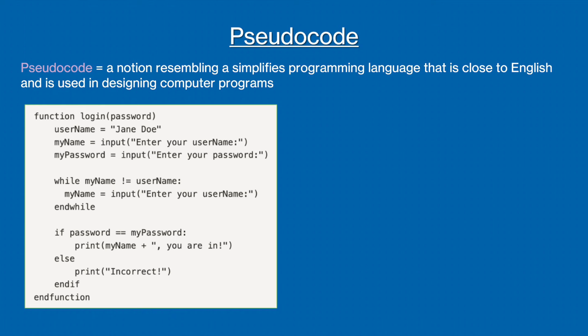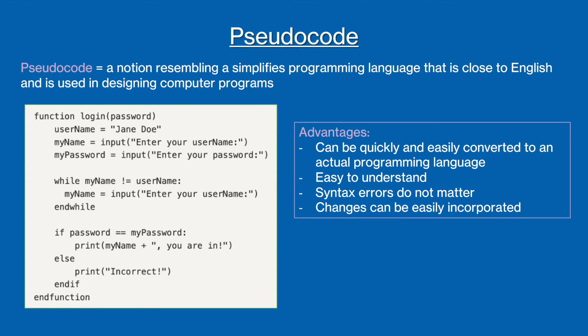There are advantages and disadvantages when writing a program in pseudocode like this. The advantages are that, as we just saw, the algorithm can be quite easily understood. The pseudocode can also be quickly and easily converted into an actual programming language. Lastly, as we mentioned before, syntax errors don't matter, and changes can be made easily.